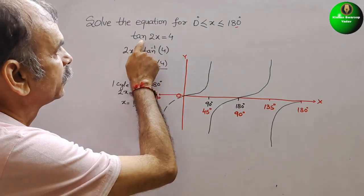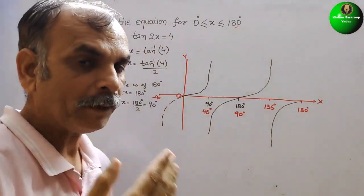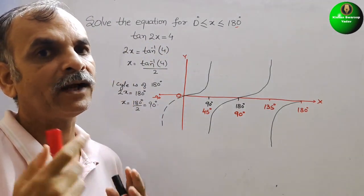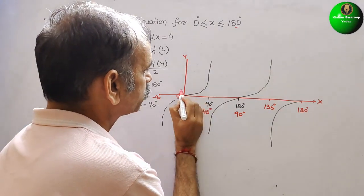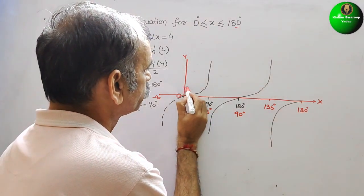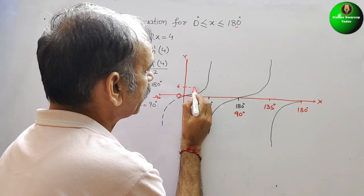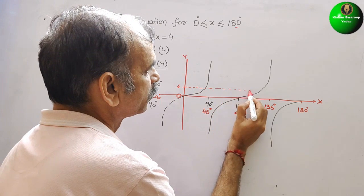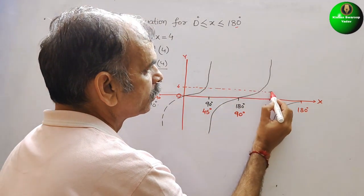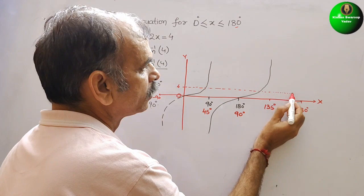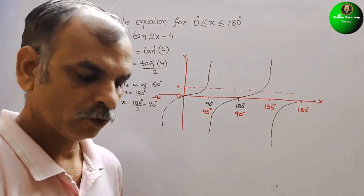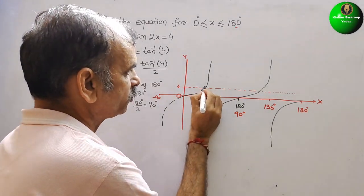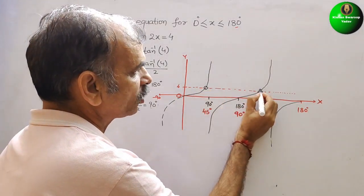They have told that the value is 4, meaning amplitude is at 4. So we make a horizontal line at 4. Now our solutions are the two intersection points — this is your first solution and this is your second solution.